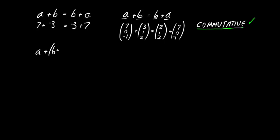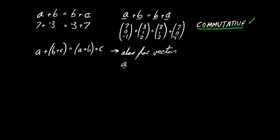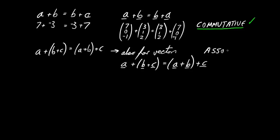A second property: for three ordinary numbers, a + b + c equals (a + b) + c — the order doesn't matter. This is also true for vectors, because the way we define vector addition is to add each component to the corresponding component. So vector (a + b) + c equals vector a + (vector b + c). This property is called being associative — vector addition has this property too.